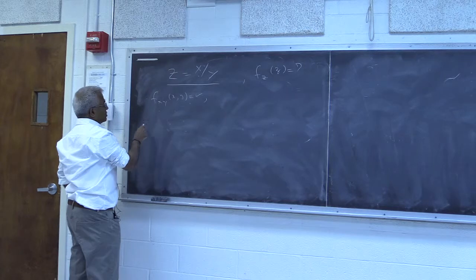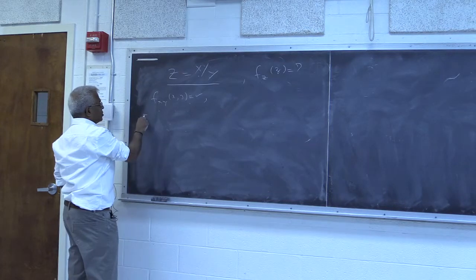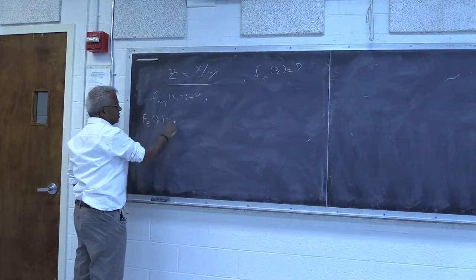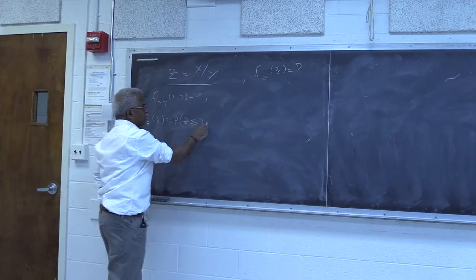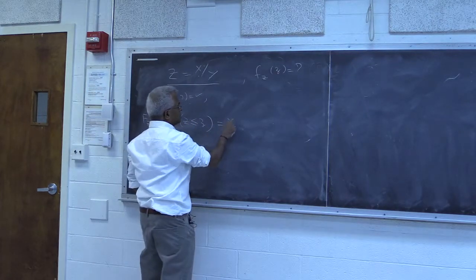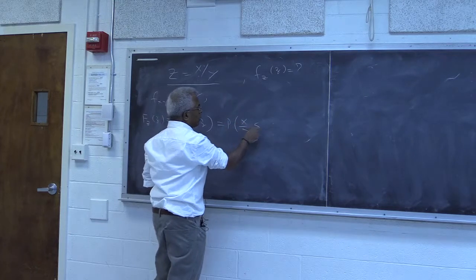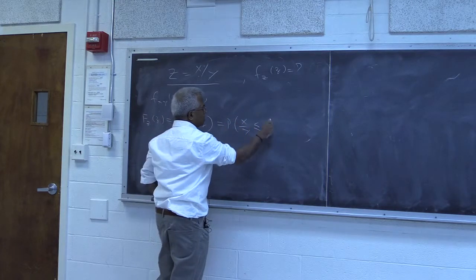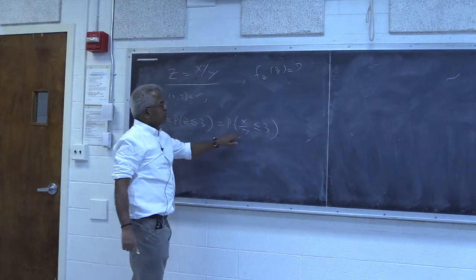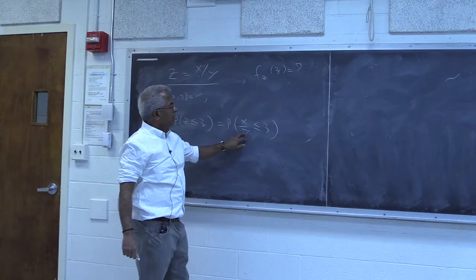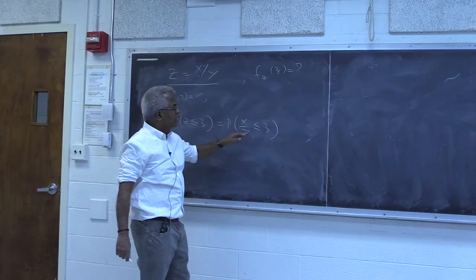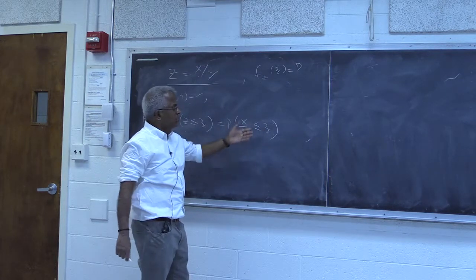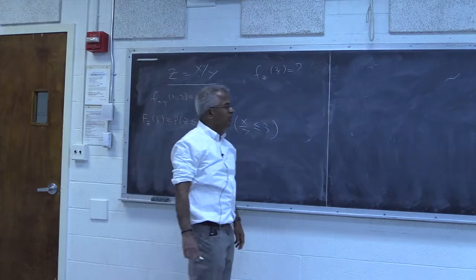We can start with the distribution function of z — that's the probability of z less than or equal to z. But z is defined as x over y, so we need x over y less than or equal to z. To bring y across, you have to be careful because if y is positive or negative, the results are going to be different.